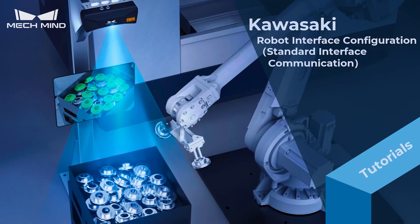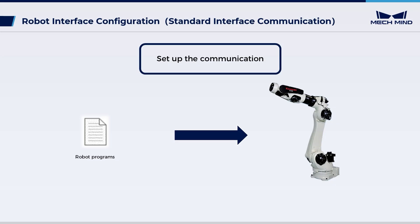This video introduces how to practice standard interface communication on a Kawasaki robot, a process we refer to as loading. Loading is the process of importing robot programs into the robot system to establish communication between the vision system and the robot.